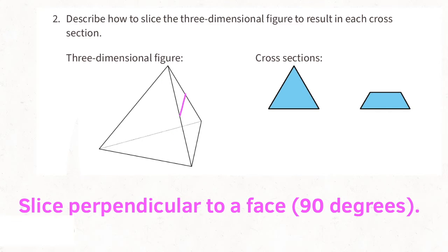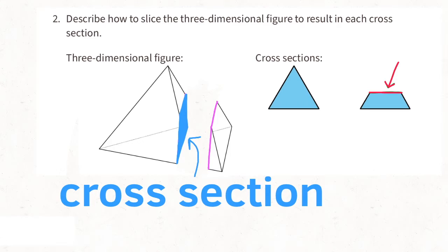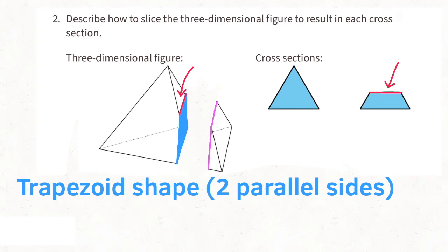Slice perpendicular to a face, and if you looked at it straight on, the shape of the cross section would be a trapezoid, just like this cross section.